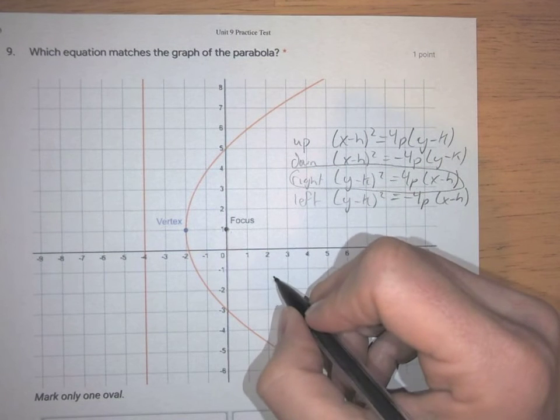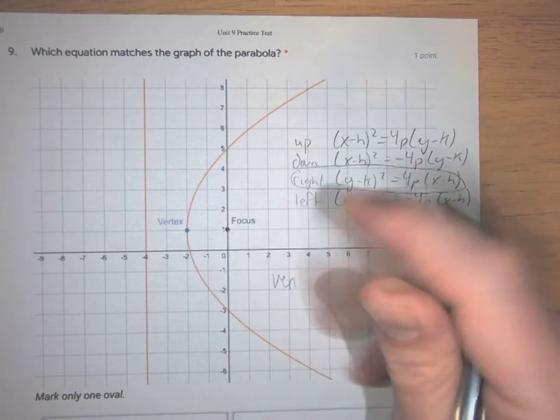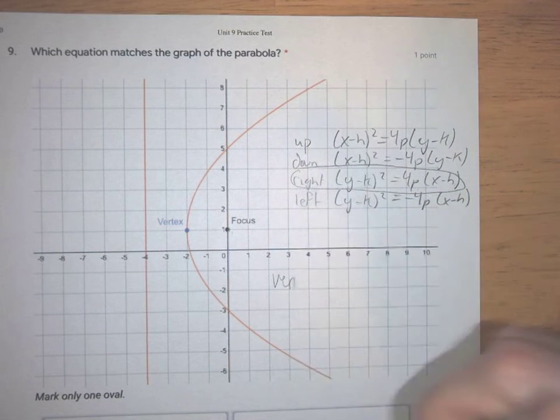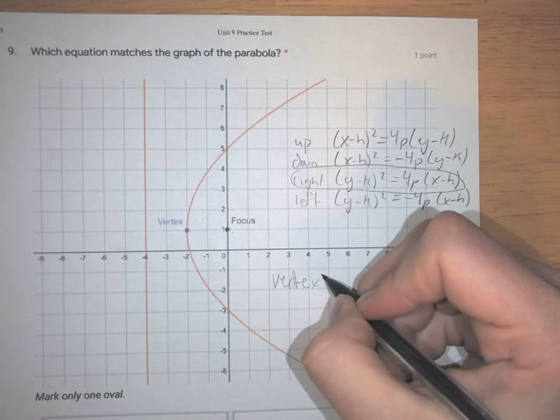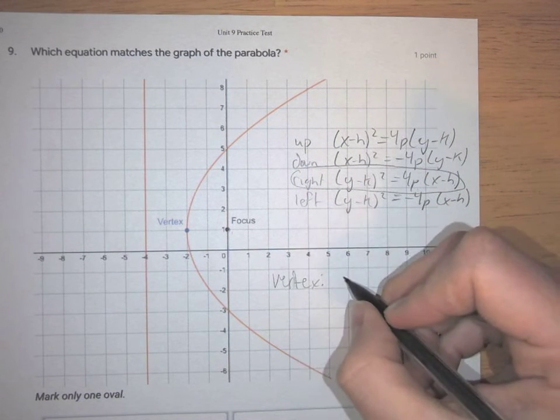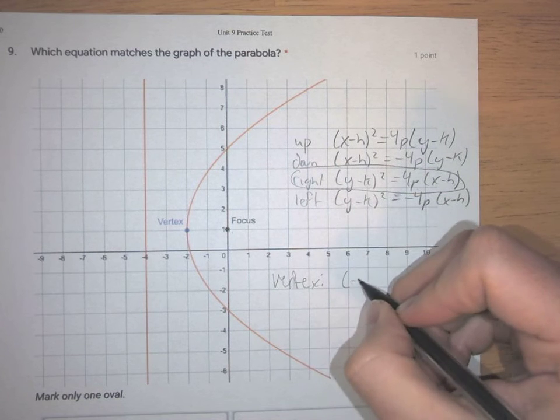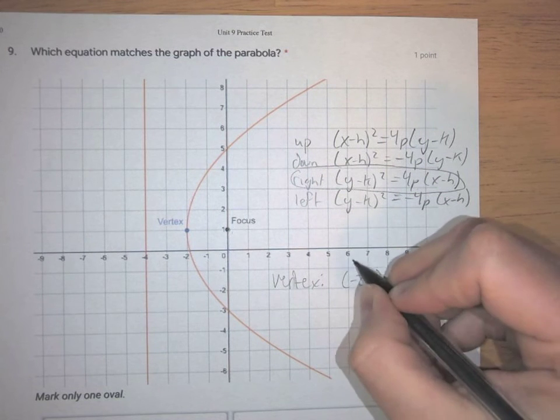So the vertex is (h,k). And the vertex in this case is (-2, 1), so this is h and this is k.